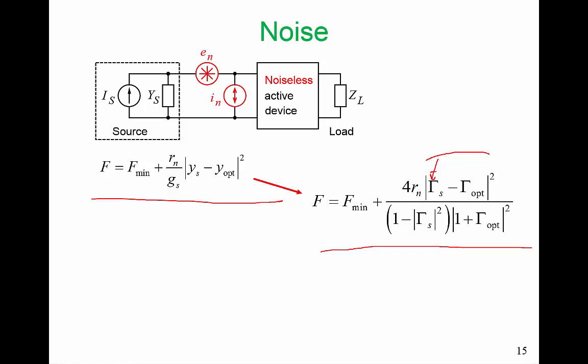And look here, here we have a complex number, which is gamma s, and we subtract from that another complex number, which is just a constant now, and we square it. Well, this describes a circle. In fact, this whole formula here describes a circle with a particular center and radius.